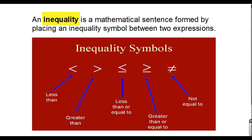For instance, we know that four is less than five — four is lower than five. And conversely, using the greater than symbol, five is greater than four. We could also say five is greater than three, five is greater than two, five is greater than one. There's a whole lot of numbers that five is bigger than.